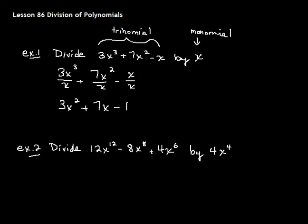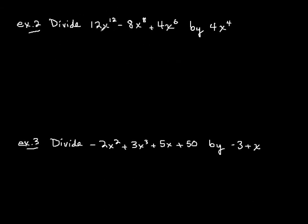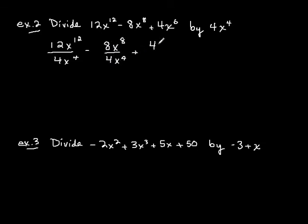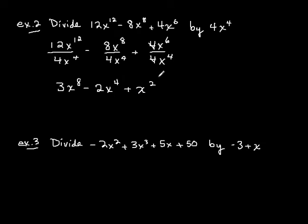Let's try another one of those — same thing. We're going to divide a trinomial by a monomial. You would just take each part and divide it by 4x to the 4th. 8x to the 8th divided by 4x to the 4th, plus 4x to the 6th over 4x to the 4th. 4 goes into 12 three times; we subtract the exponents and get x to the 8th. 4 goes into 8 two times, so it's 2 — subtract our exponents to the 4th. And the 4s cross out, and we just get x squared. That's all there is for dividing a trinomial by a monomial.